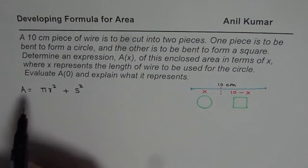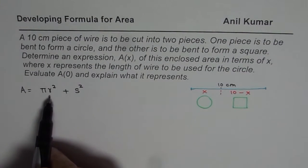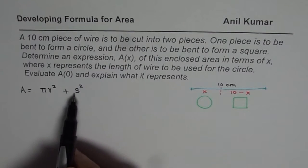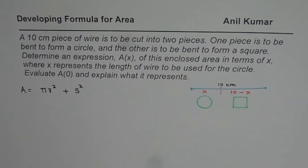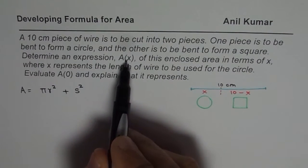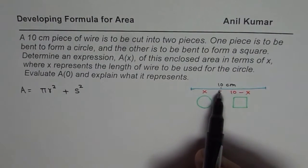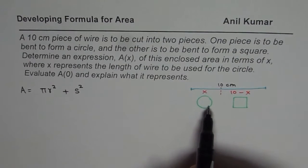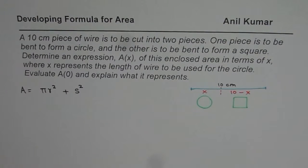Now you can clearly see that this area is function of two different variables, radius and the side length of the square. We need to relate them and write as a function of x, the length which we have decided to convert into a circle. Now you can pause the video, answer and then look into my suggestion.